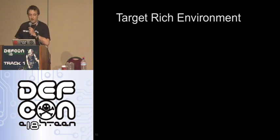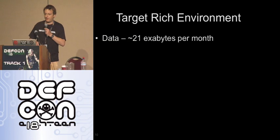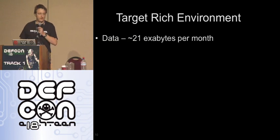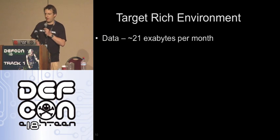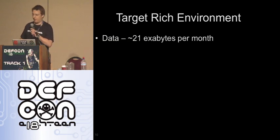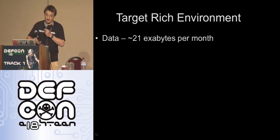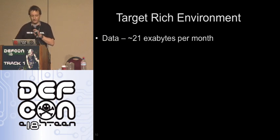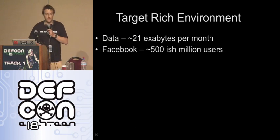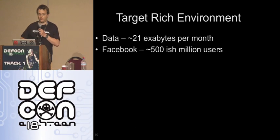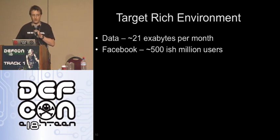Target-rich environment, real quick: there's a Cisco report saying there's 21 exabytes of data flowing around per month. Before I got out here I heard that Facebook had 500 million-ish users, Twitter around 100 million, and so on. So there's a lot of people who've got their information out there.